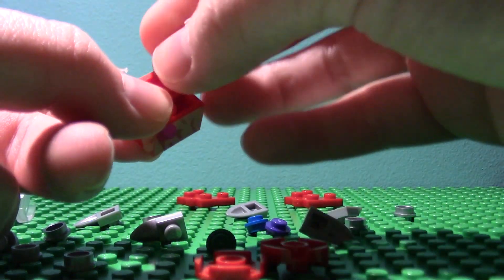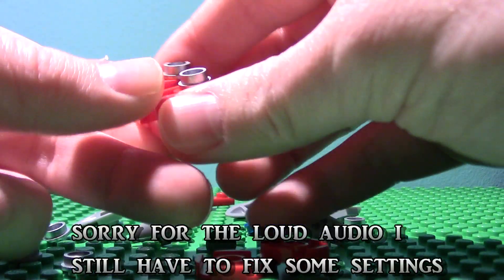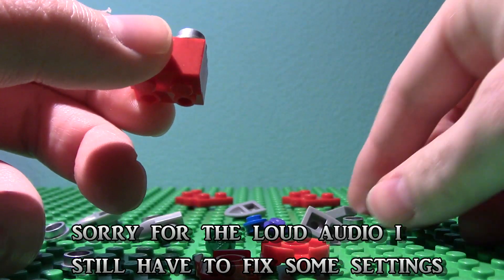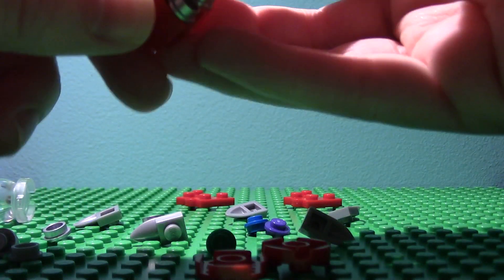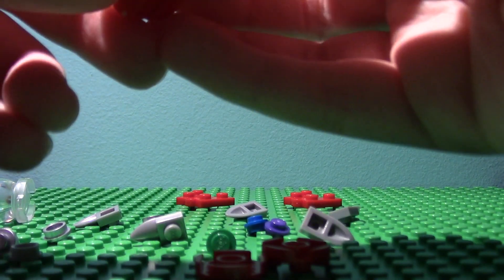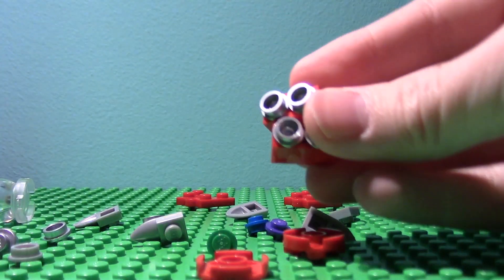You're going to want to get chrome light gray or dark gray 1x1s. Now if you have a 2x2 chrome plate, not round and chrome, then you can use that too. Light gray works too, doesn't really matter.